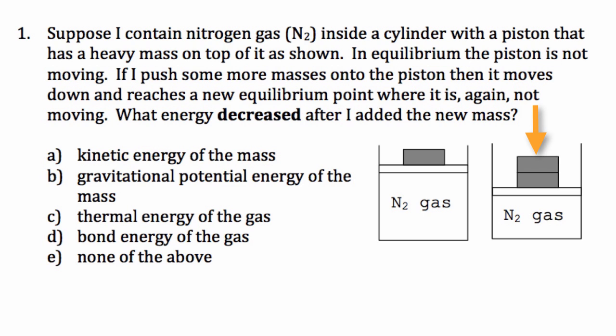Suppose I push some more masses onto the piston. It moves down and reaches a new equilibrium point. So here's what I'm envisioning. There's this piston here with a mass sitting on it. There's another mass over here and all I do is move it over to where it's on top of it and then I let go and it comes down to a new equilibrium point. So that second mass pushes the gas down some more so that the gas has a smaller volume. So that's the situation.